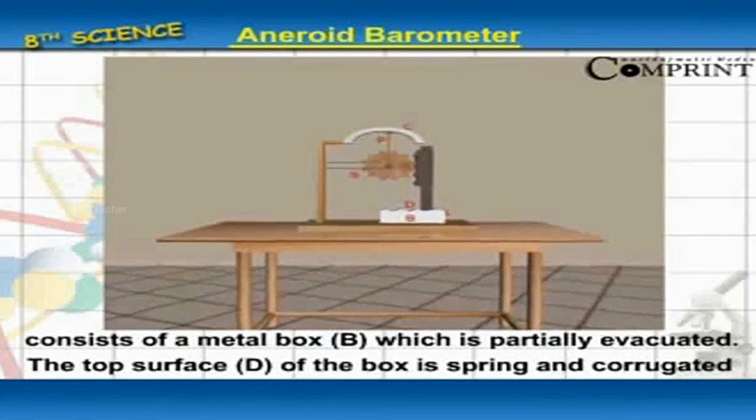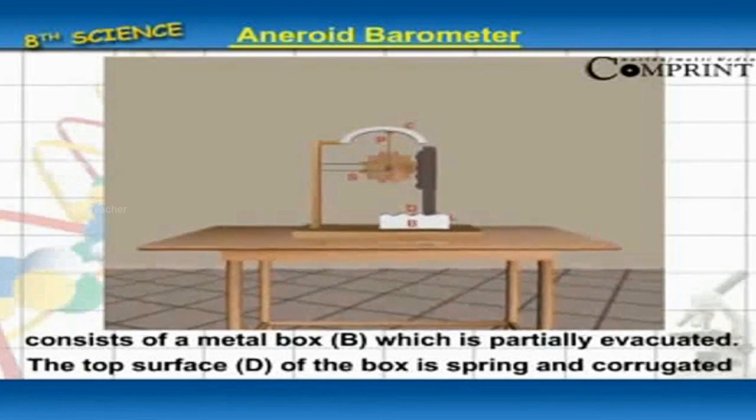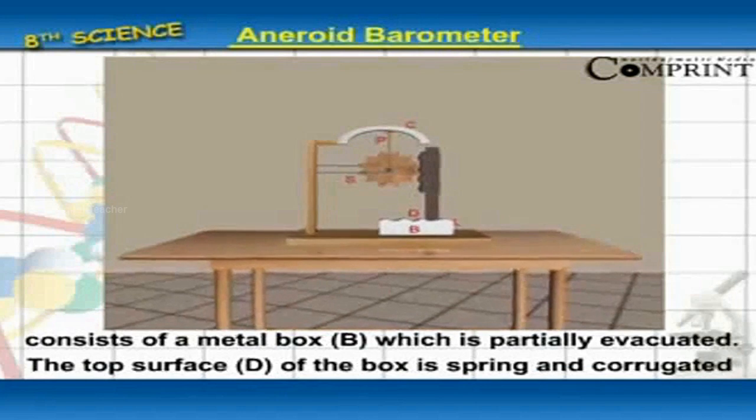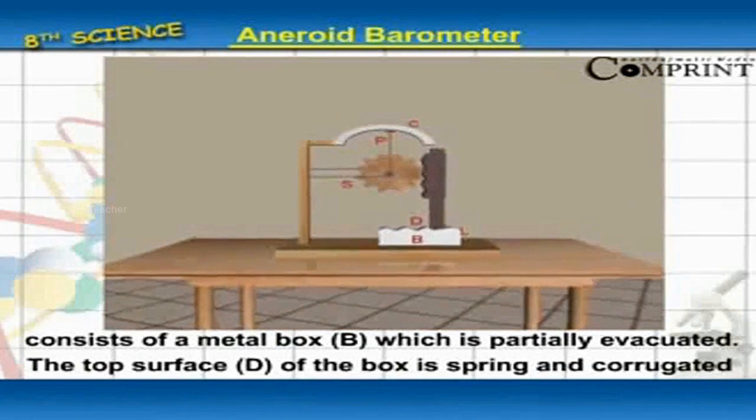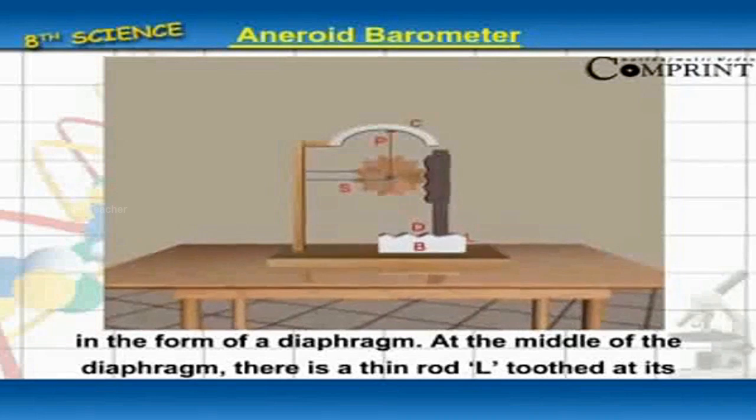It consists of a metal box B which is partially evacuated. The top surface D of the box is spring and corrugated in the form of a diaphragm.